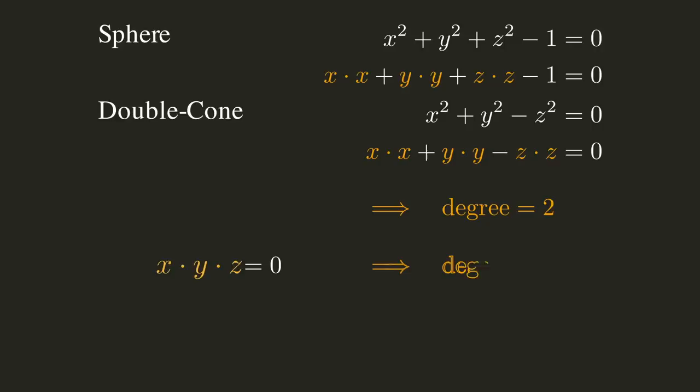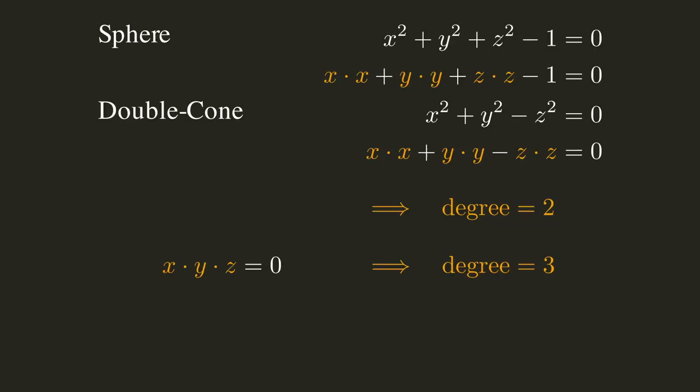The degree just counts how many variables get multiplied together in each term of the equation. For example, the degree of our sphere or our double cone would be two, since two variables get multiplied in the terms. The degree of x times y times z equals zero would therefore be three.